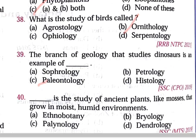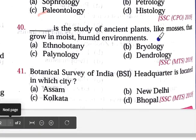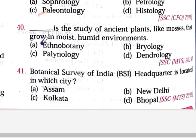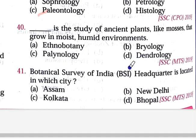Question number 40: The study of ancient plants like mosses that grow in moist, humid environments. Option A is ethnobotany, option B is bryology, option C is palynology, option D is dendrology. Option B is correct — bryology.